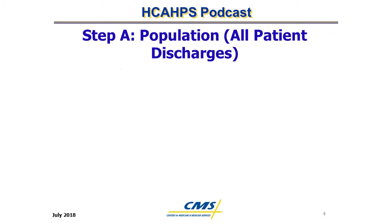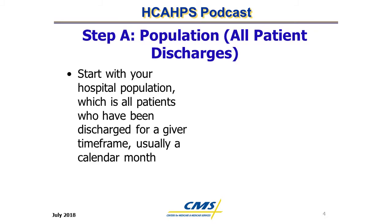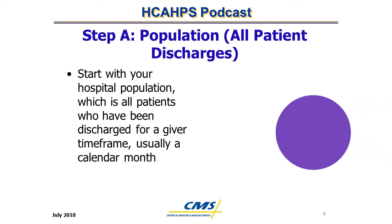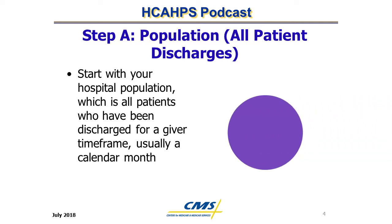Step A: Population — All patient discharges. A hospital's population includes all patients who have been discharged for a given time frame, usually a calendar month. On this slide, we see the population denoted by the purple circle.